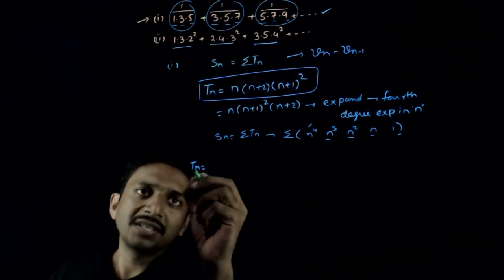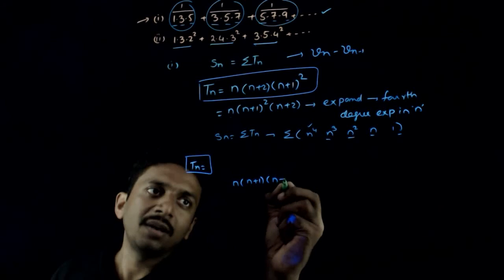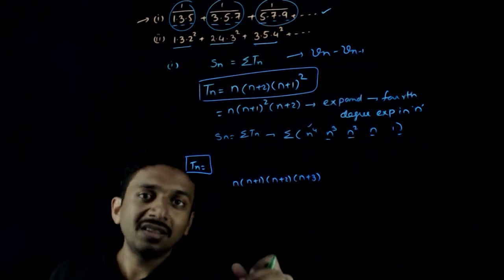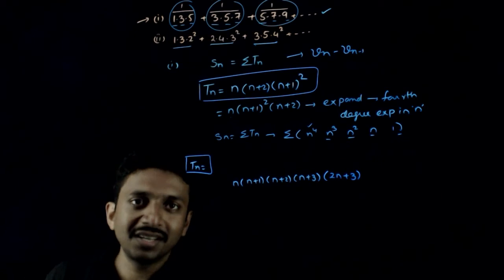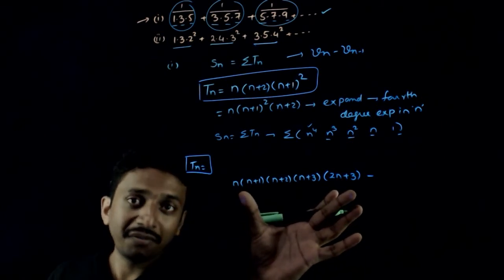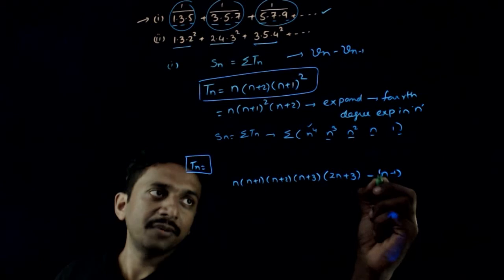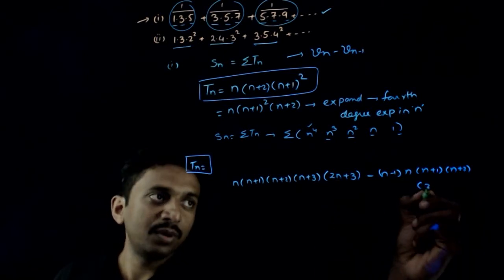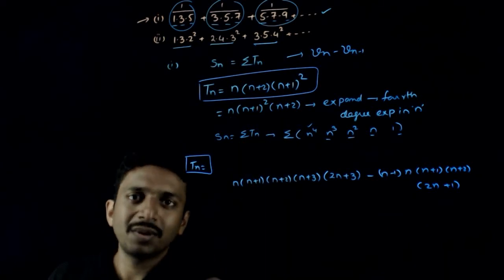For trial, since Tn is a 4th degree expression, the Vn function will be 5th degree. Let us consider Vn = n(n+1)(n+2)(n+3)(2n+3). Now subtract Vn−1 — replacing n with n−1: Vn−1 = (n−1)(n)(n+1)(n+2)(2n+1). Let us see what happens when we subtract these two.